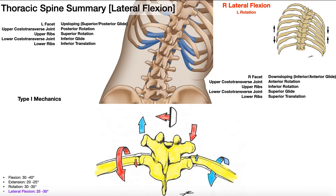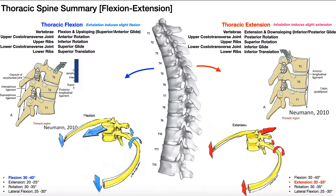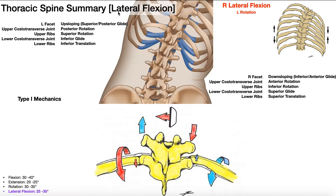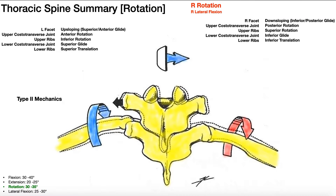Welcome back to Anatomy and Physiology on Catalyst University. My name is Kevin Tokoff. Please make sure to like this video and subscribe to my channel for future videos and notifications. In this video we're going to continue talking about movements of the thoracic spine and how they affect movements of the ribs. We talked about flexion and extension in the previous video; now we're going to do lateral flexion and rotation.